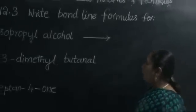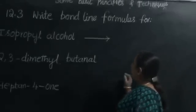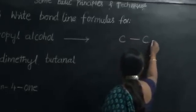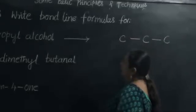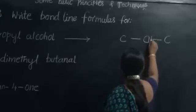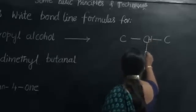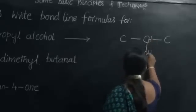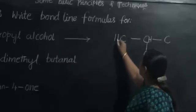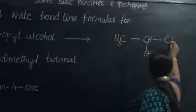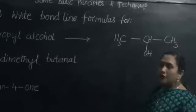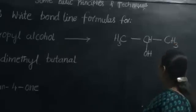Isopropyl alcohol — 'propyl' means it is talking about the presence of three carbon atoms. Isopropyl alcohol means the OH is present in the branch of the chain. This is the structure of isopropyl alcohol.